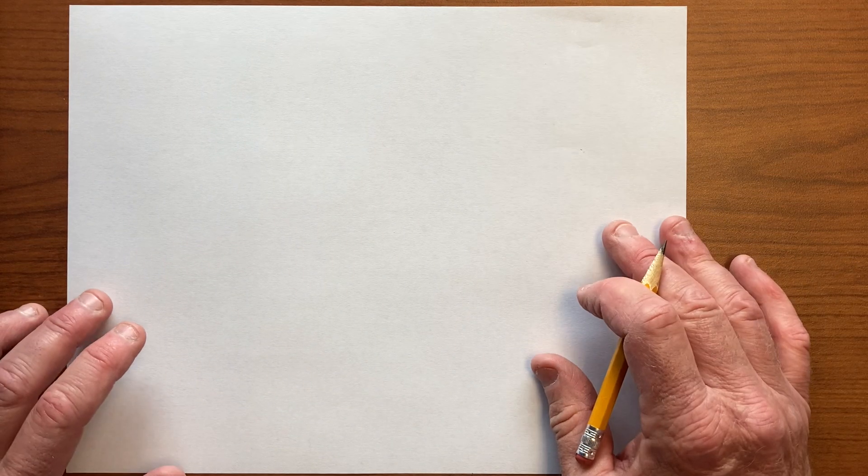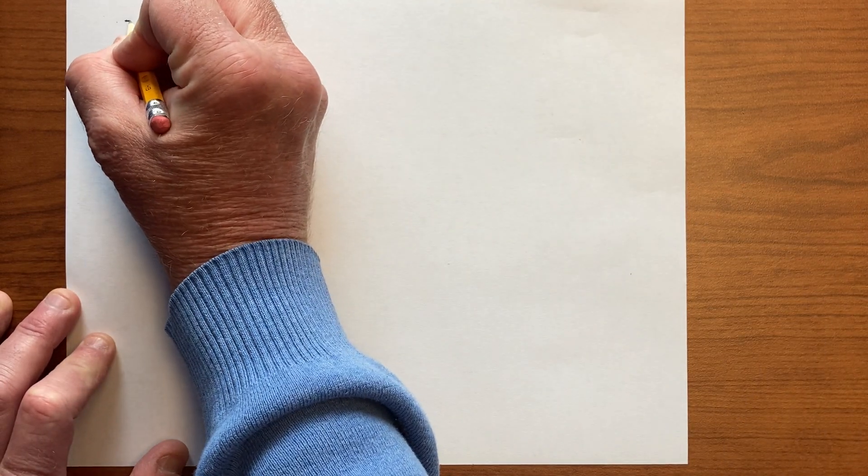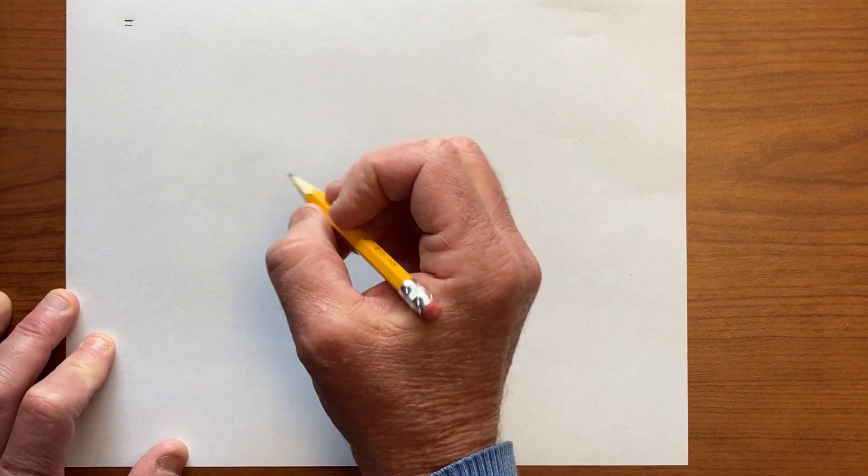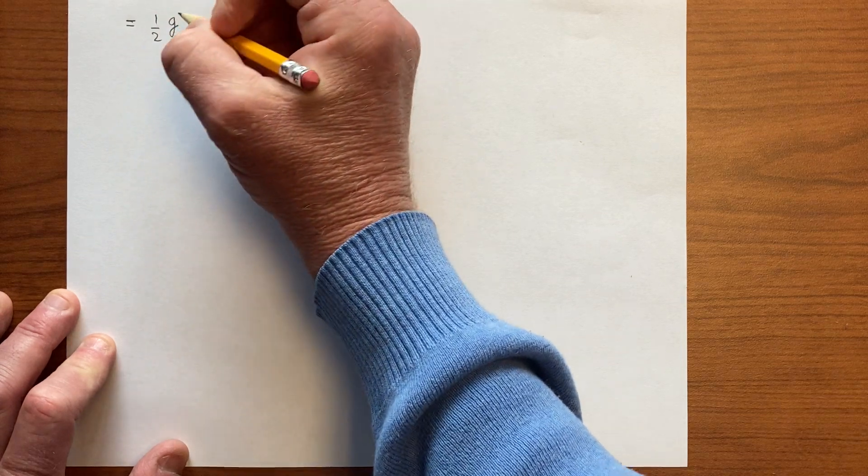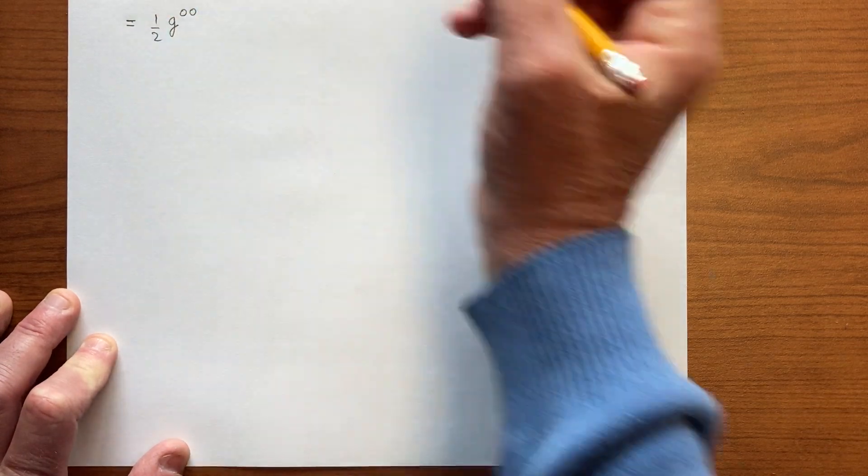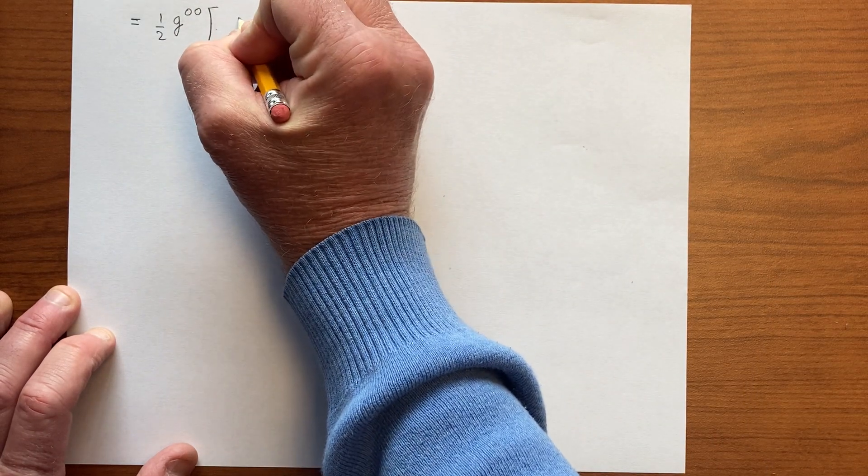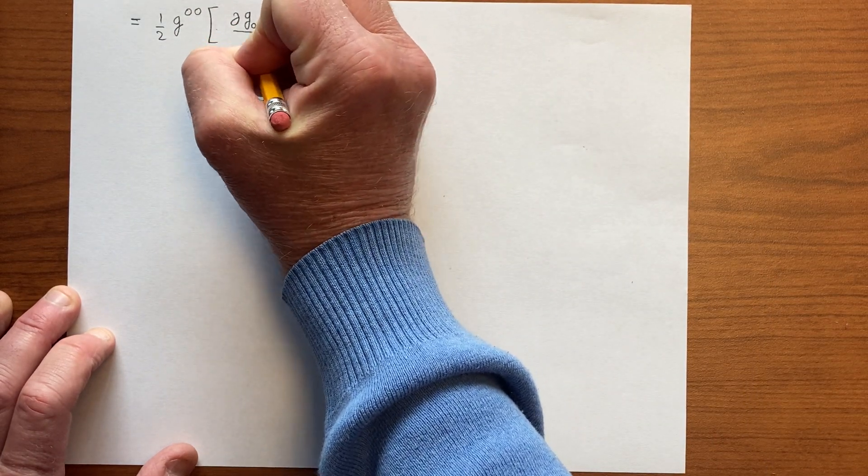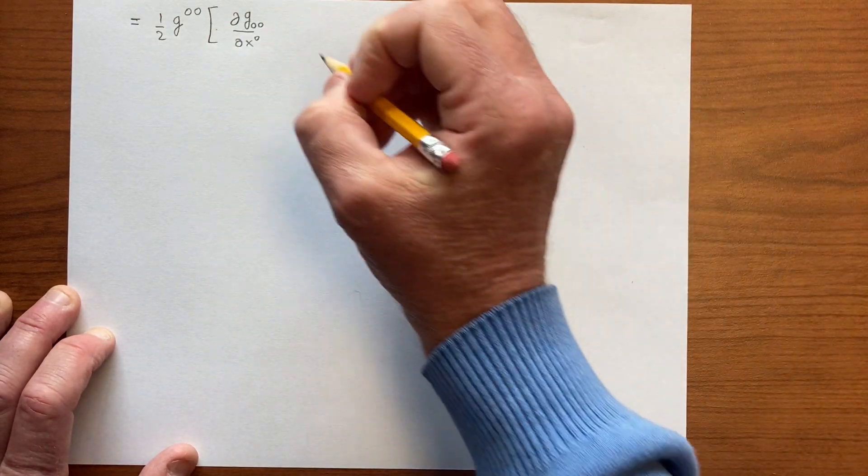Continue with that. So this is equal to, now we're summing on b, so we have ½g^00 ∂g_00/∂x^0 plus same thing.